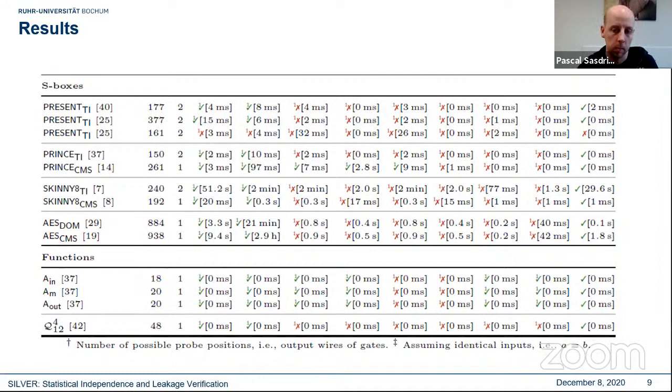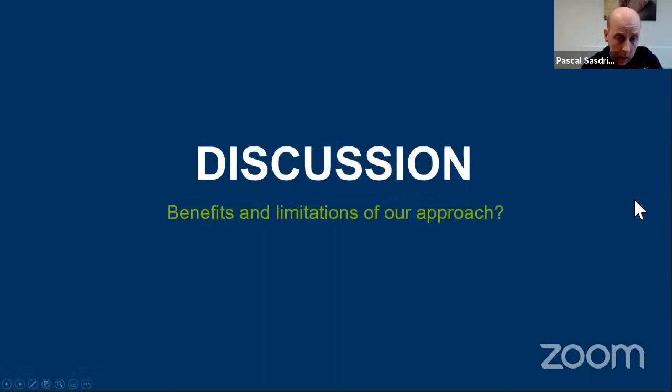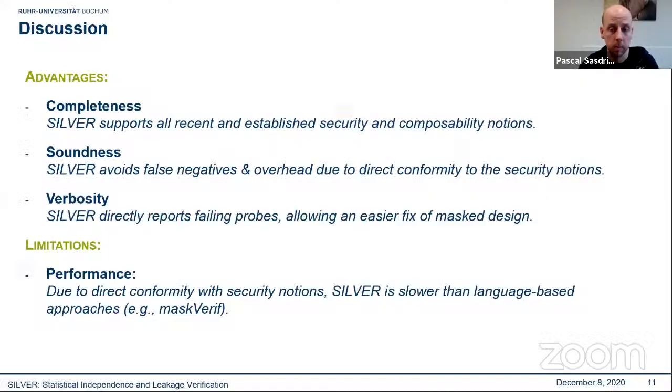So before concluding this talk, I briefly would like to discuss the benefits, but also the limitations of our approach. So as we intended to build a sound, complete and easy to use tool, our framework supports all recent and established security notions and composability notions in software and hardware-based leakage model. Further, Silver avoids false negatives, enhances direct conformity with the formal security definitions for the various security notions. And eventually, our tool is designed to assist designers in fixing the flaws as quick as possible. For instance, in reporting the first set of probes that failed the security evaluation, and hence, guiding the designers in fixing the flaws. But on the downside, due to its direct conformity with the security notions, Silver cannot use optimizations that were used for recent language-based tools, such as MaskVerif, and hence, in comparison, is slower than such approaches.